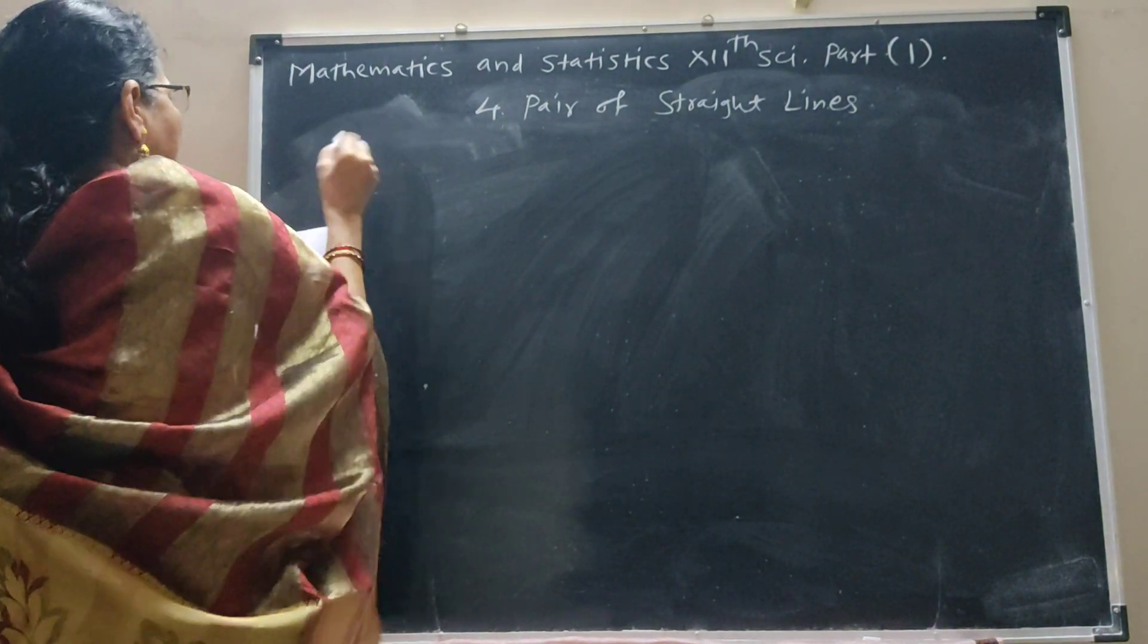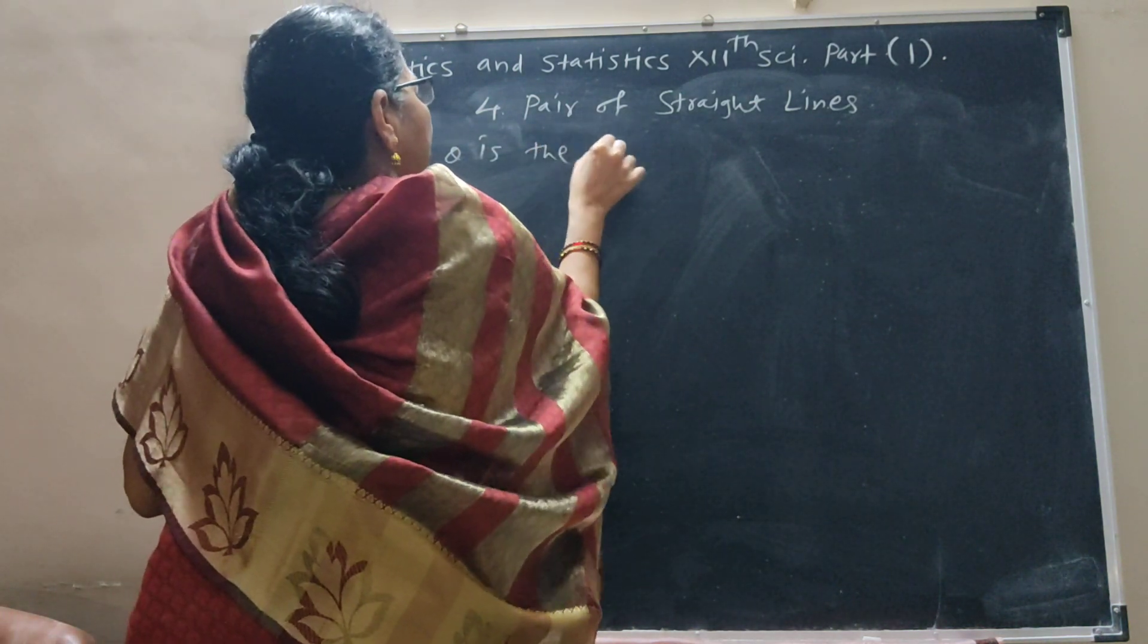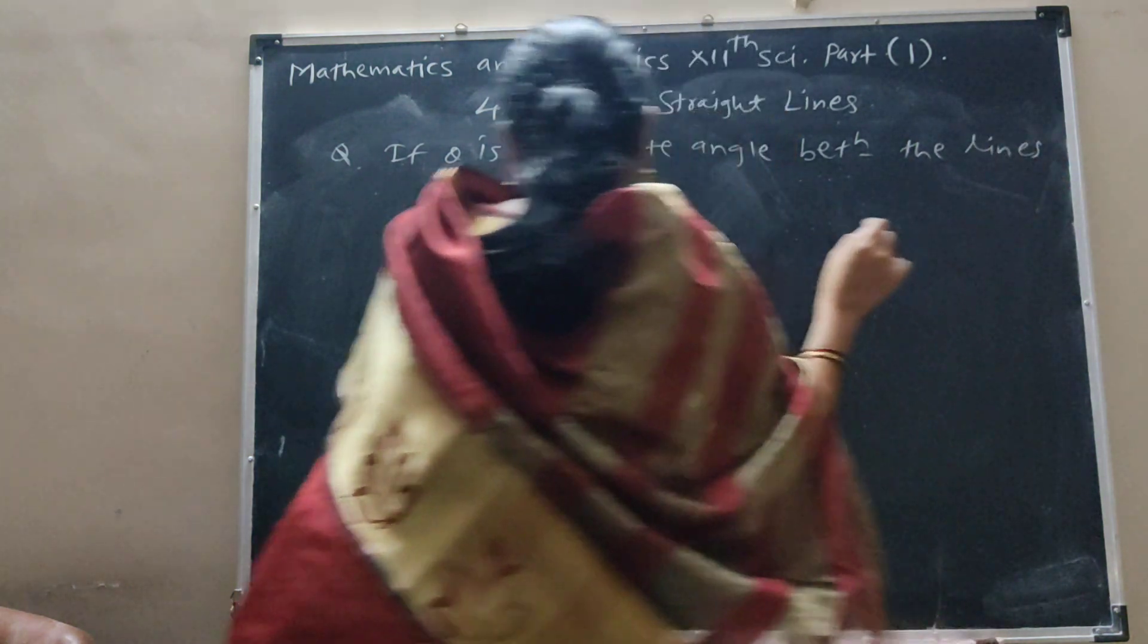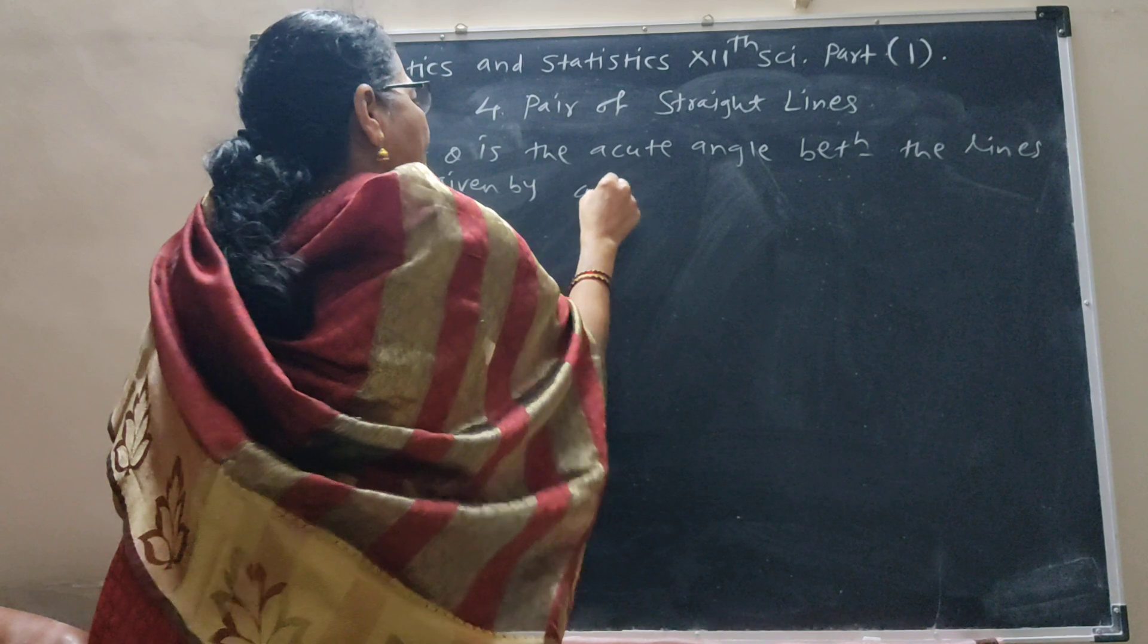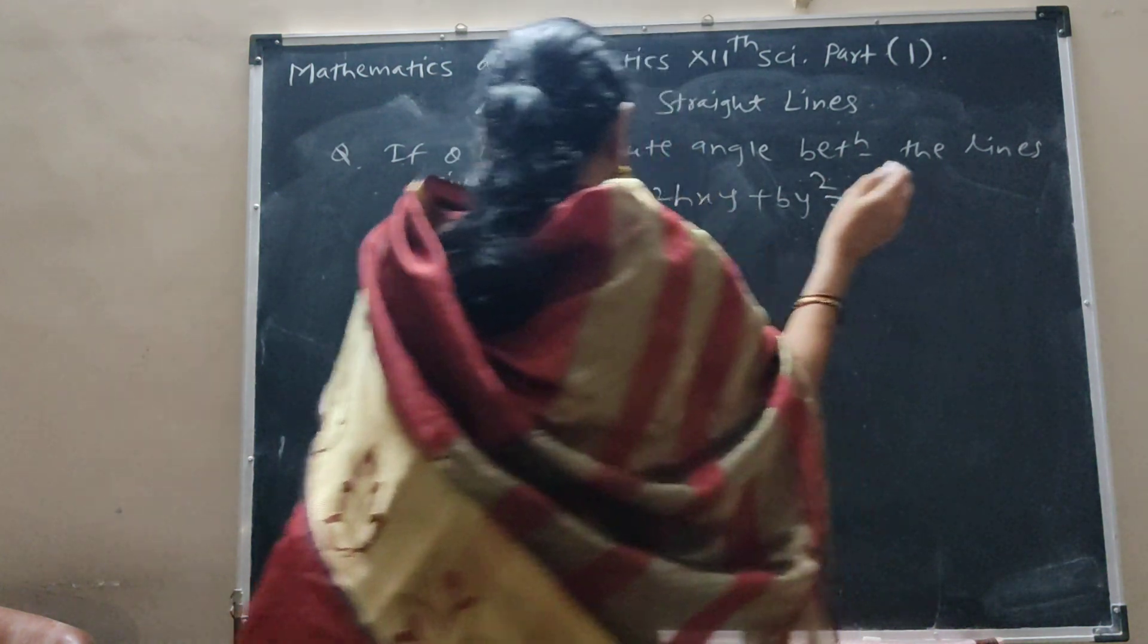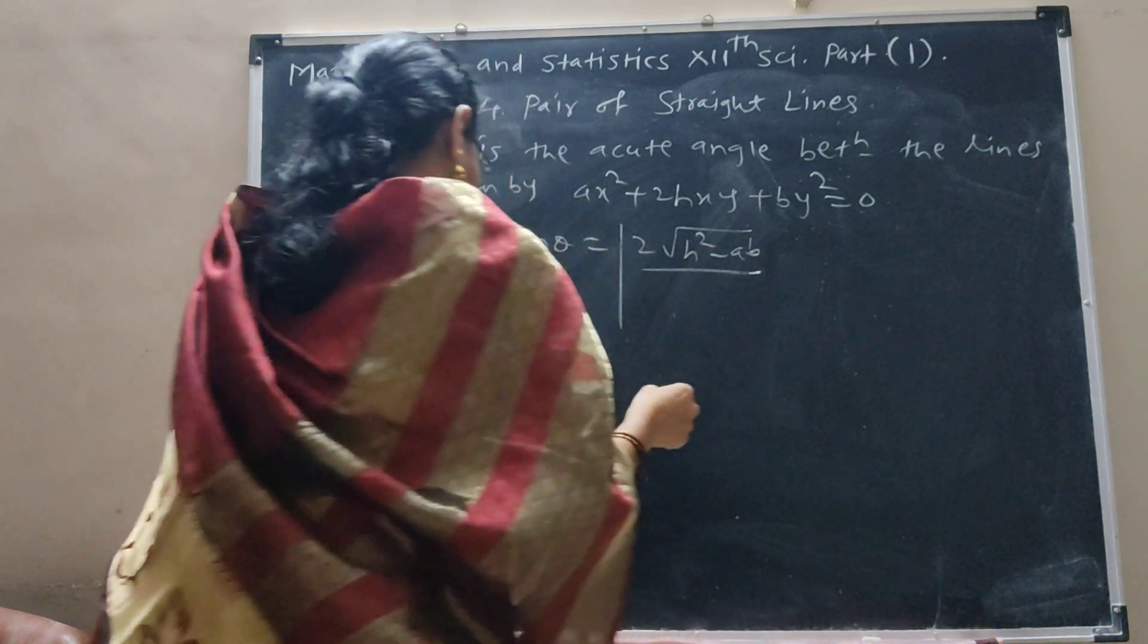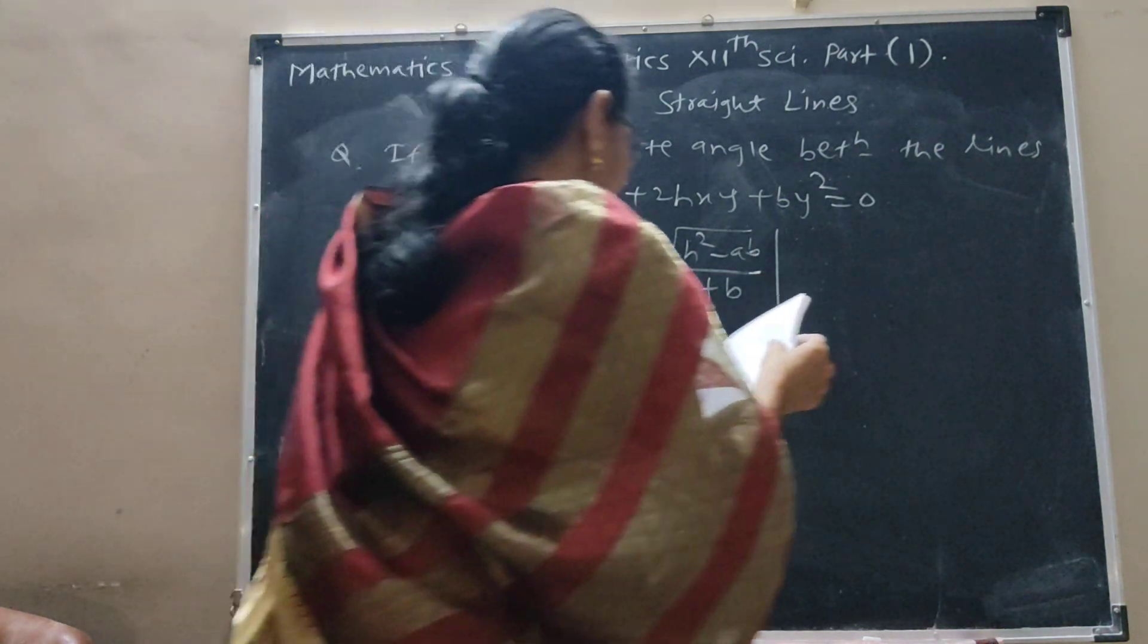Question: If θ is the acute angle between the lines given by ax square plus 2hxy plus by square equal to 0, show that tan θ equal to 2 root h square minus ab upon a plus b, where a plus b not equal to 0.